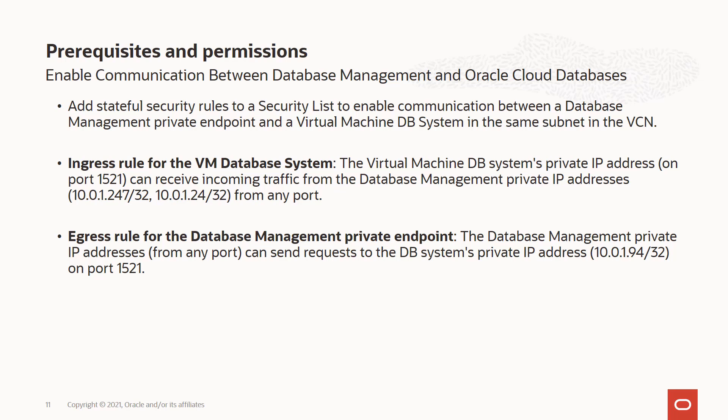To make it clearer: you would add stateful security rules to a security list to enable communication between a database management private endpoint and a virtual machine DB system, bare metal, or Exadata system in the same subnet in the VCN. The ingress rule allows the VM DB system's private IP address on port 1521 to receive incoming traffic from the database management private IP addresses from any port. The egress rule allows the database management private IP address from any port to send requests to the DB system's private IP address on port 1521, which is the port on which the listener listens.